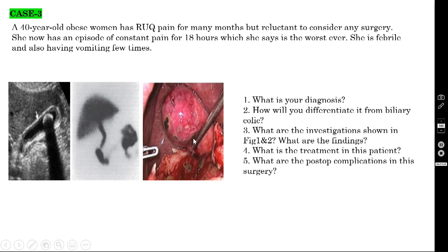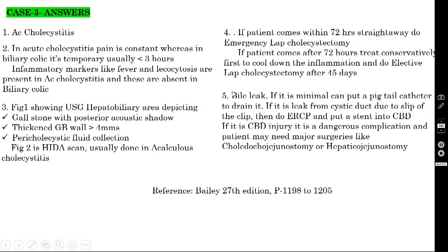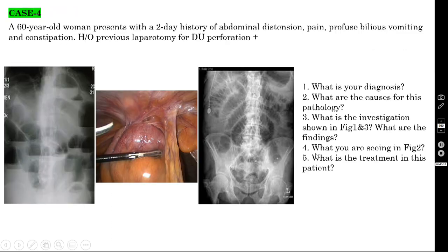What are the post-op complications in cholecystectomy? Bile leak is the most dangerous complication. Hemorrhage from injury to the cystic artery can occur but is manageable. For minimal bile leak, you can place a pigtail catheter. For cystic duct leak due to clip slippage, perform ERCP and place a stent into the CBD. For CBD injury with bile leak — a dangerous complication — the patient may need major surgery such as choledochojejunostomy or hepaticojejunostomy.